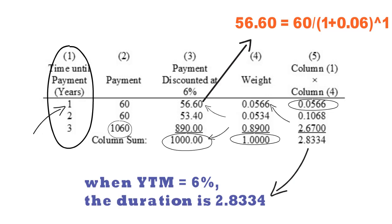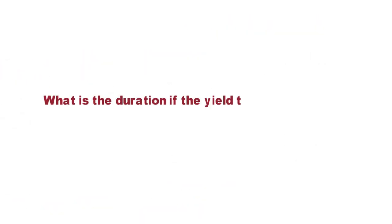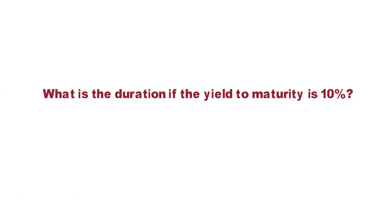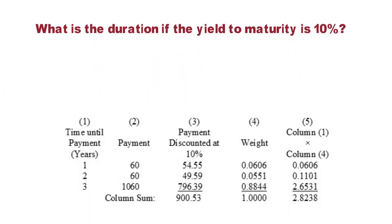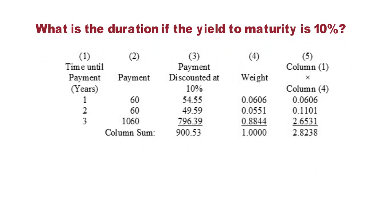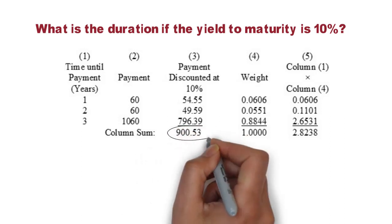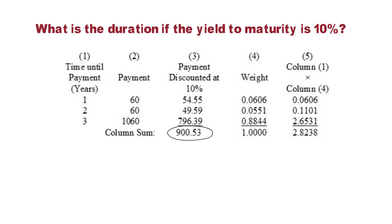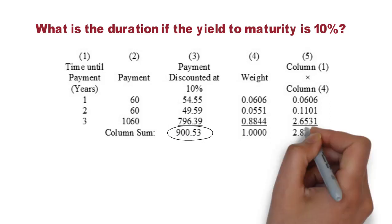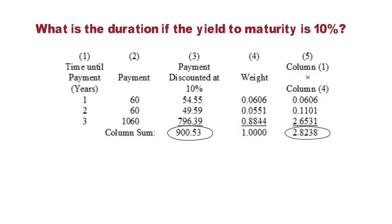Now, the second part of the question: what is the duration if the yield to maturity is 10%? The calculation looks like this. We do the same calculation as described previously. Please note that, unlike the previous table, column 3 of this table shows the price of the bond, which is 900.53. Finally, in column 5, the sum is 2.8238, which is the bond's duration.